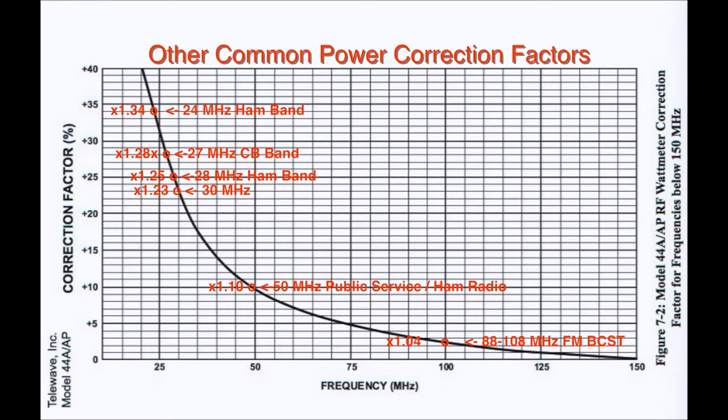Here we have some other common power correction factors: 24 megahertz ham band, 27 megahertz CB band, 28 megahertz ham band, the 30 to 50 megahertz public service and ham radio bands, and the FM broadcast band from 88 to 108 megahertz.